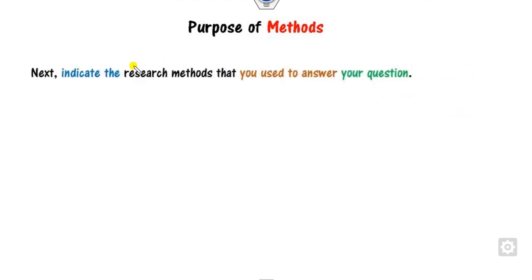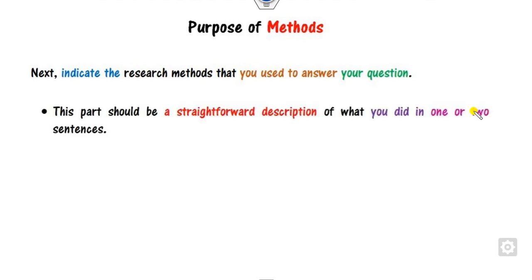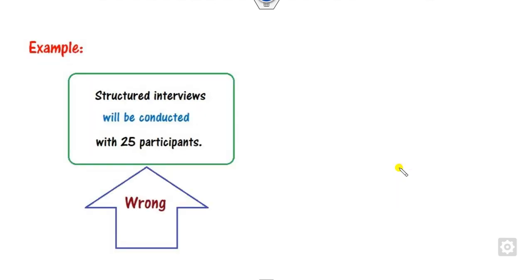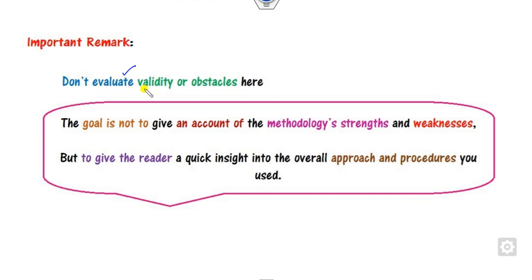The Method section indicates whatever method you proposed to answer your research question. This part should be a straightforward description of what you did, in one or two sentences. It is written in the past tense because the action is already completed. For example, the correct form is: 'The structured interview was conducted on 25 participants' — not 'will be conducted,' which is a wrong future-tense statement. Make sure this section does not evaluate the validity; the goal is simply to describe the methodology. The reader should get a quick overview of your approach.